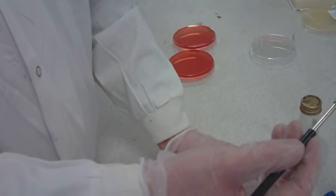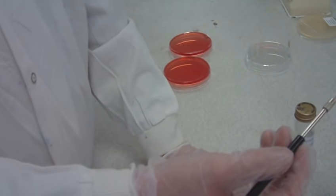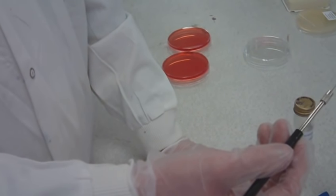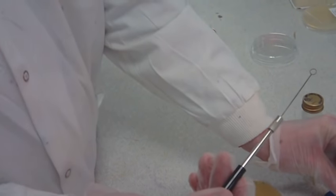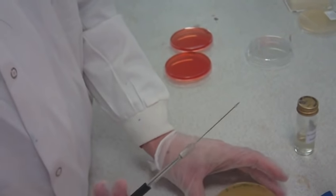Re-flame the loop to sterilize before putting away. Turn the Bunsen burner flame back to safety and please leave your agar plates on the side to be collected for incubation.